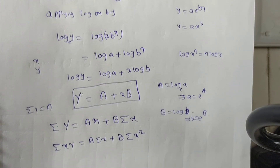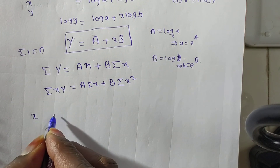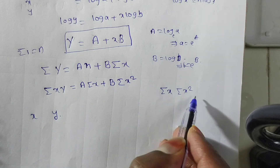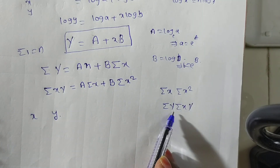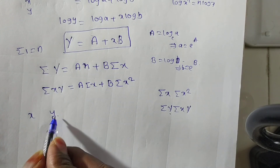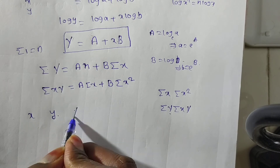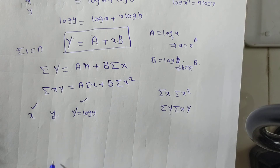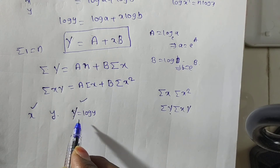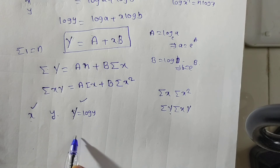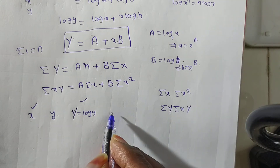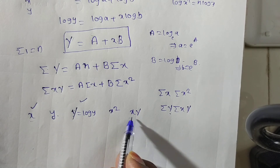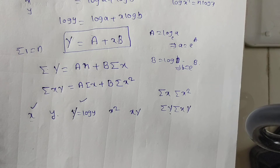We know the small x and small y values from the problem. The required quantities are: summation x, summation x², summation capital Y, and summation x·capital Y. Capital Y is nothing but log(small y), so for each observed y value you must compute capital Y = log y before summing.